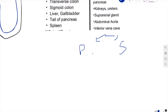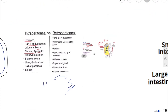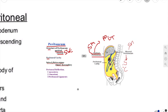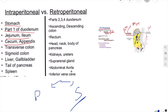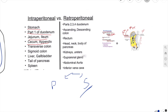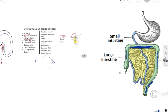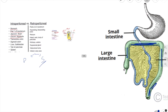The story is different for secondary retroperitoneal organs. Secondary retroperitoneal organs were initially intraperitoneal, suspended by mesentery. Through the course of embryogenesis, they became retroperitoneal as their mesentery fused with the posterior abdominal wall. Examples of secondary retroperitoneal organs include your ascending and descending colon, which were intraperitoneal during embryonic life.